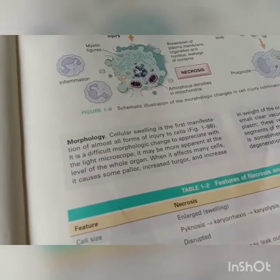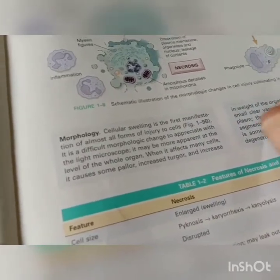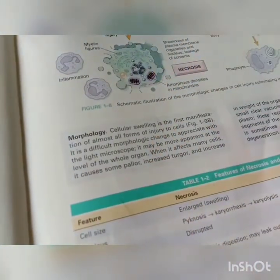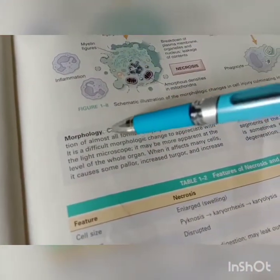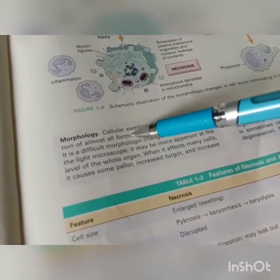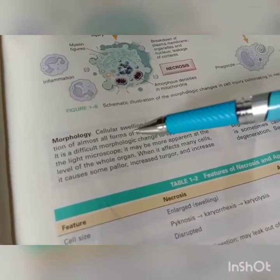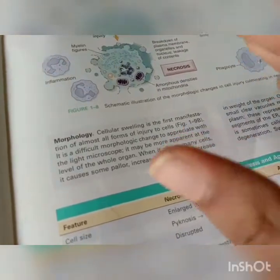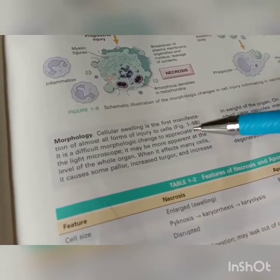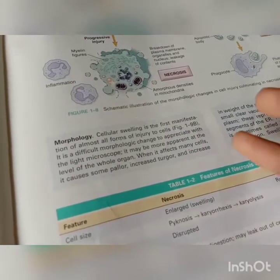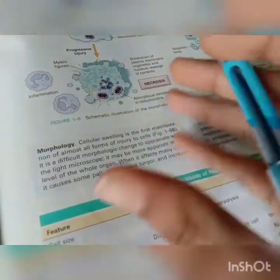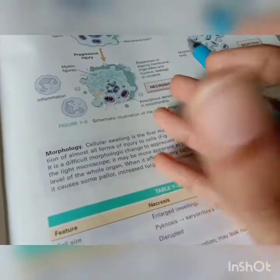Now let us see the morphology. Cellular swelling is the first manifestation of almost all forms of cell injury. It is a difficult morphological change to appreciate under the light microscope, but may be more apparent at the level of the whole organ. When it affects many cells, it causes pallor, increased turgor, and increased weight of the organ.